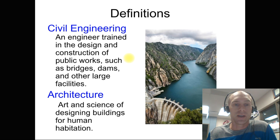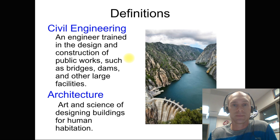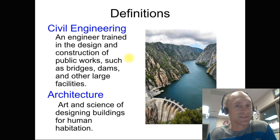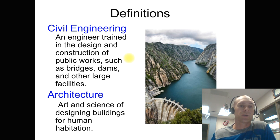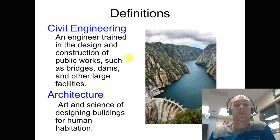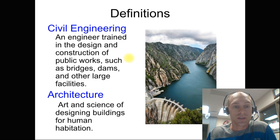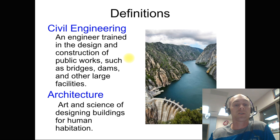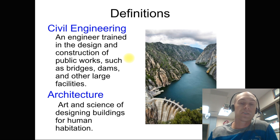Go ahead and pause this and type those out. The definition of civil engineering is an engineer trained in the design and construction of public works — dams, bridges, other things. Architecture is the art and science of designing buildings for human habitation.